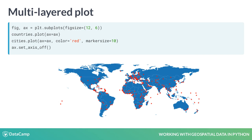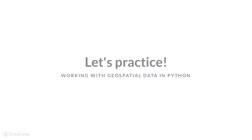Finally, we also use the set_axis_off method of matplotlib to remove the box with ticks and labels around the figure. Remember that the plot that is created is a matplotlib figure, similarly as for normal Pandas DataFrames. So the figure can also be further tweaked, such as setting the X and Y limits or labels, changing the figure size, etc., using the matplotlib interface. We will encounter some examples in the coming exercises.